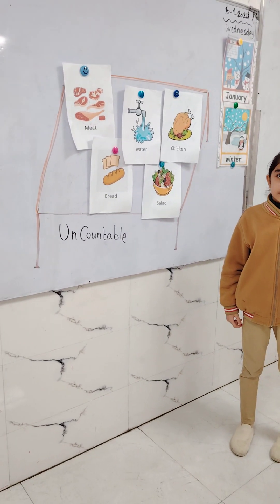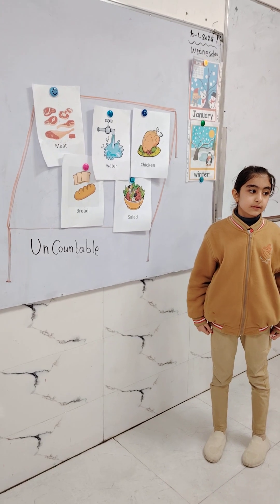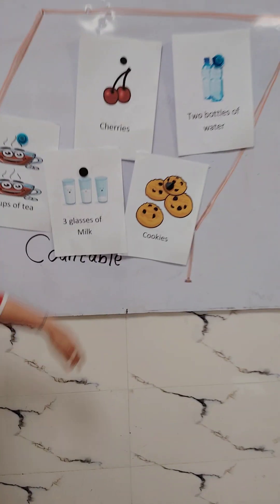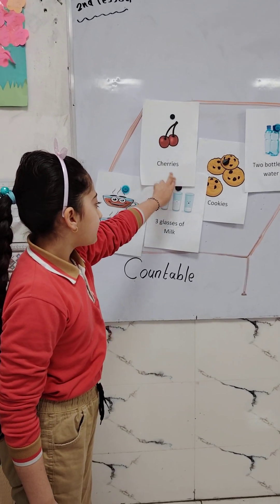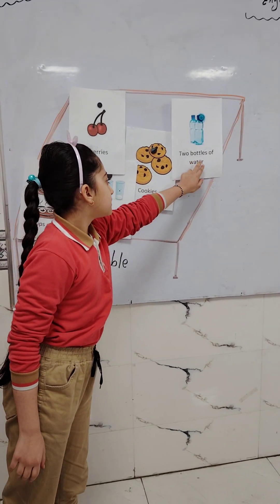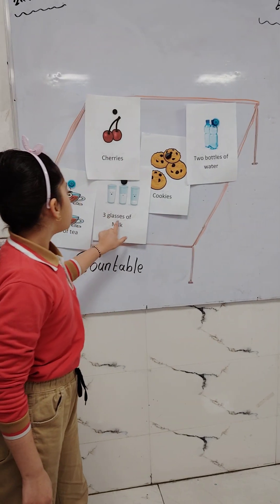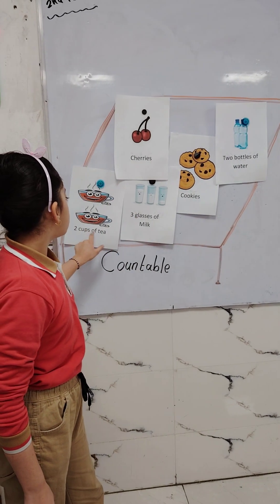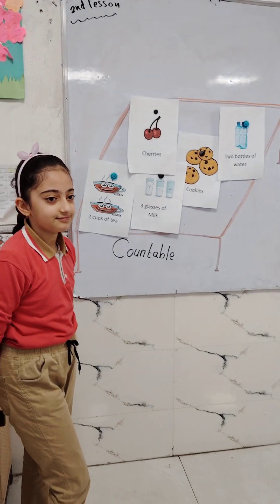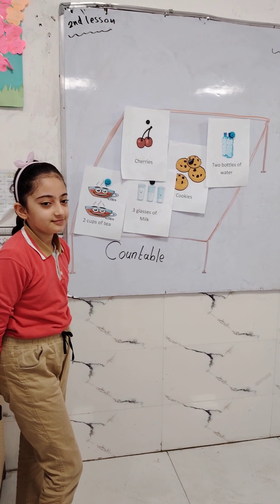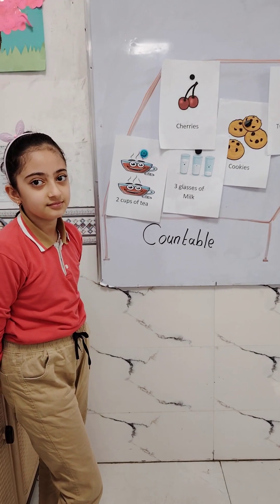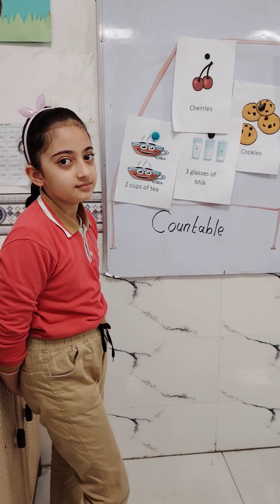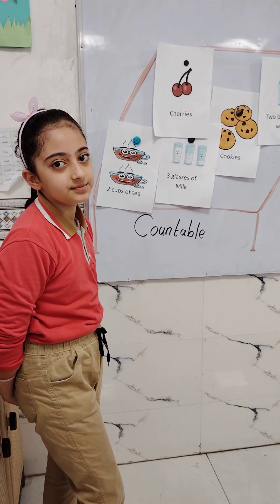What do you say, girls? Should it go on Bernat's table? Is it correct? Yes. Now show me what's on your table. Tell me — good, cookies, two bottles of water, three glasses of milk, two cups of tea. Clap to you! Water and milk and cup — uncountable, uncountable.